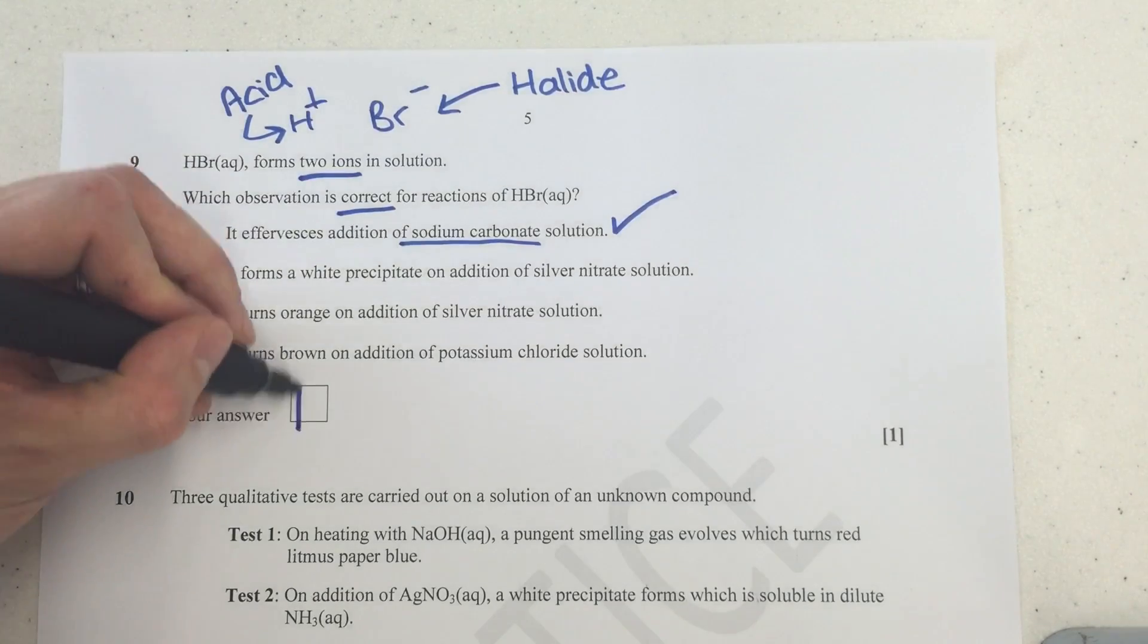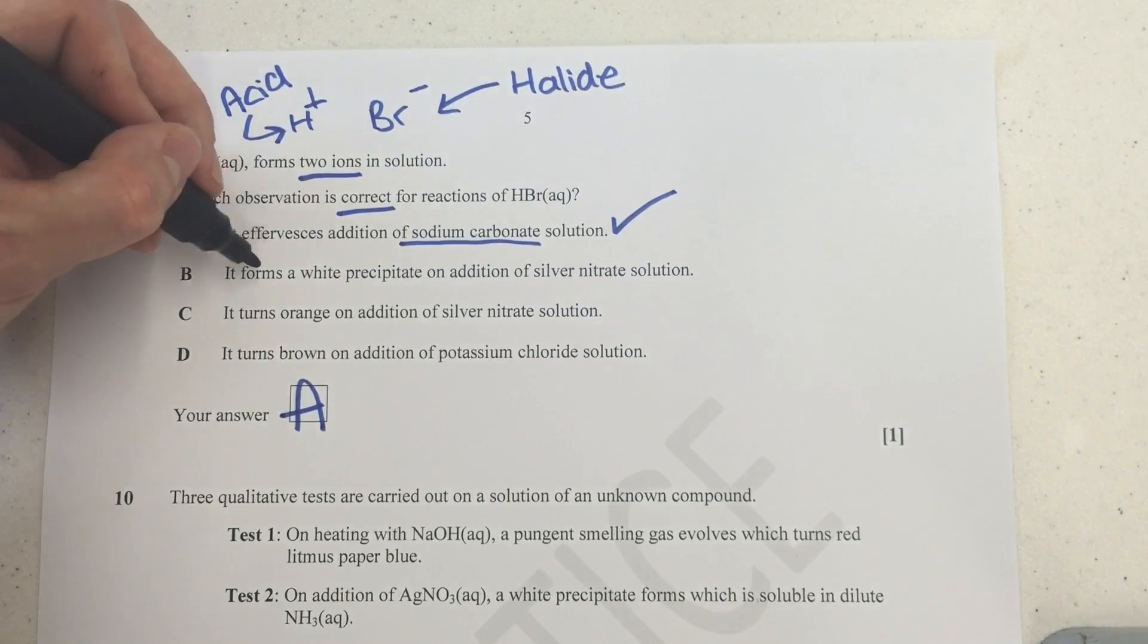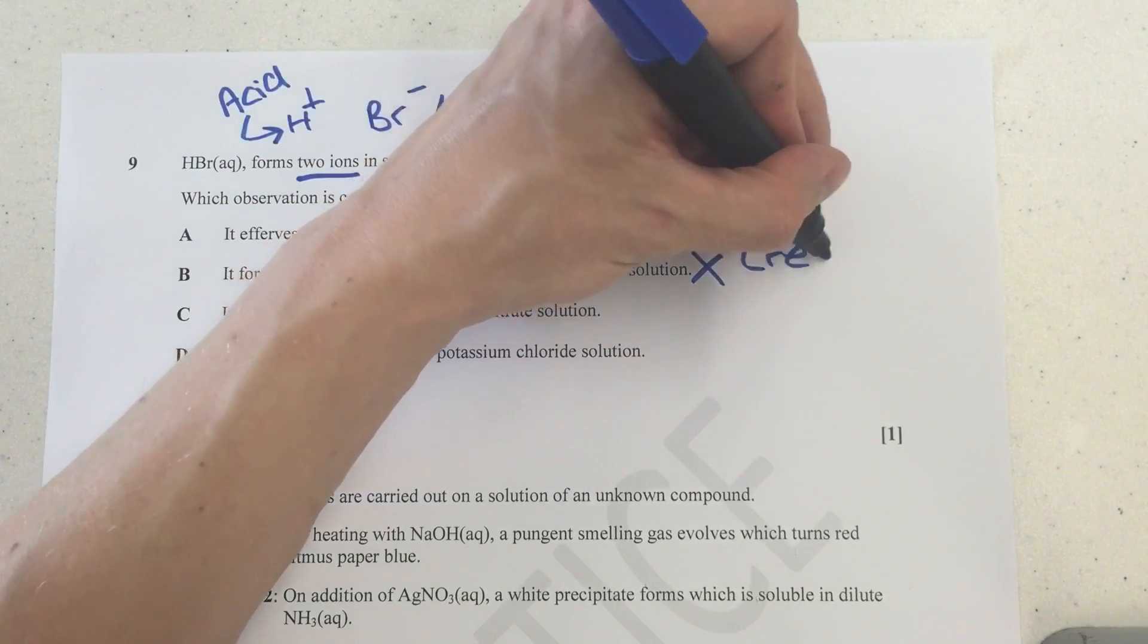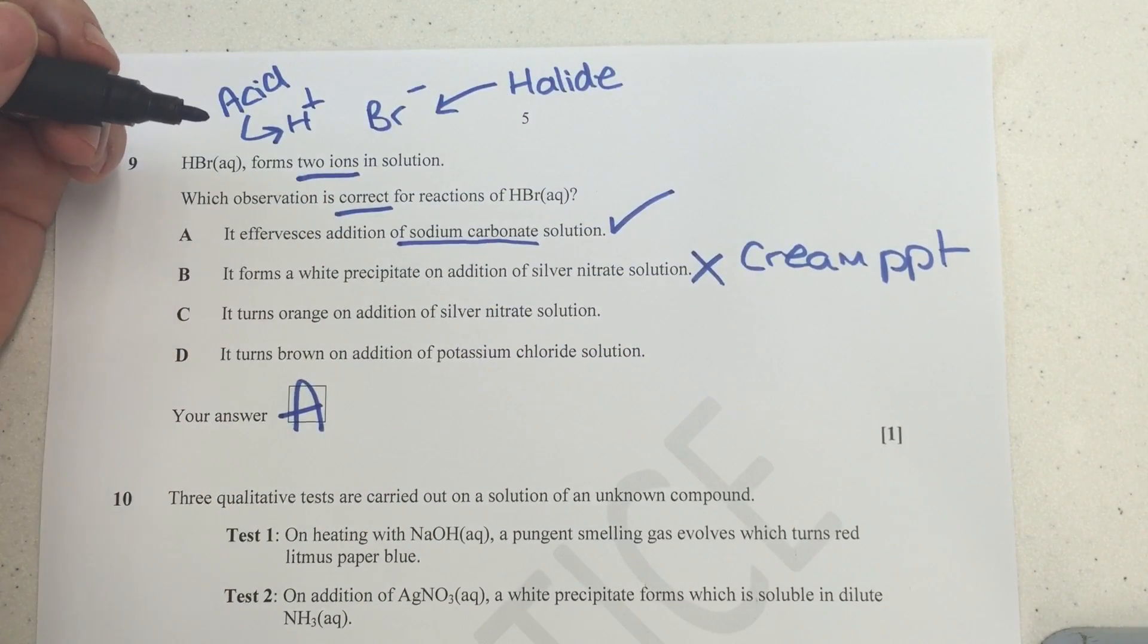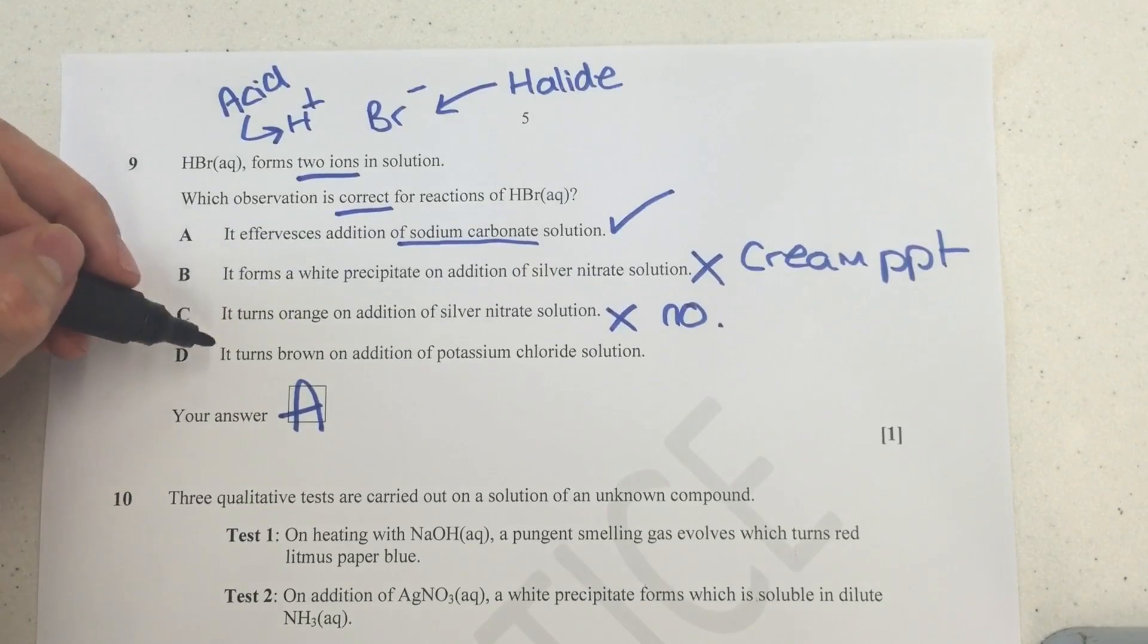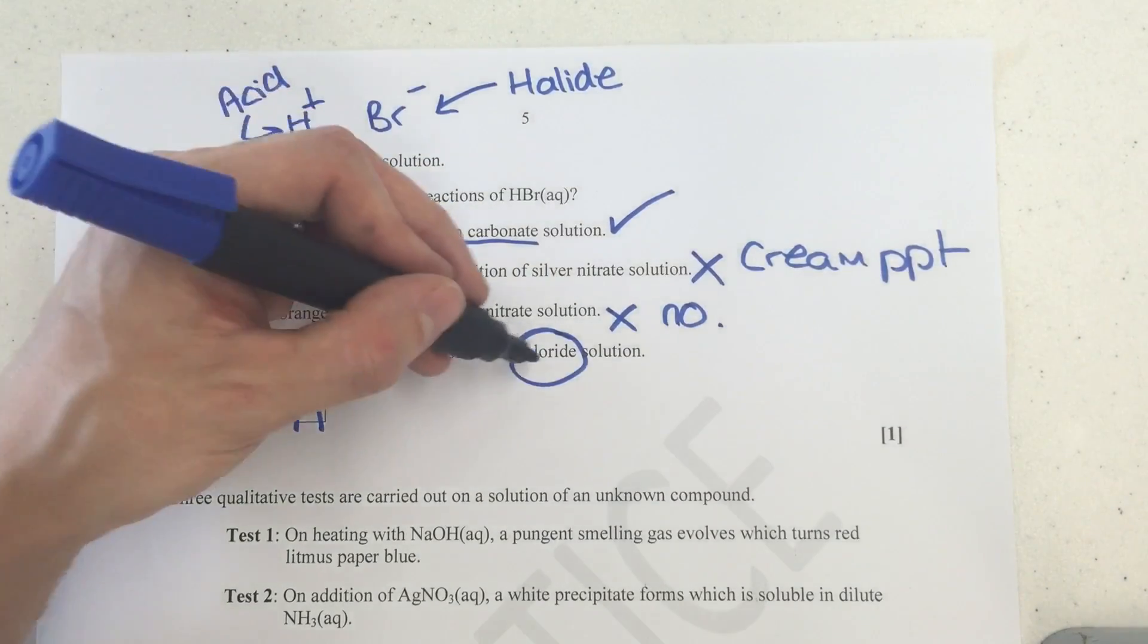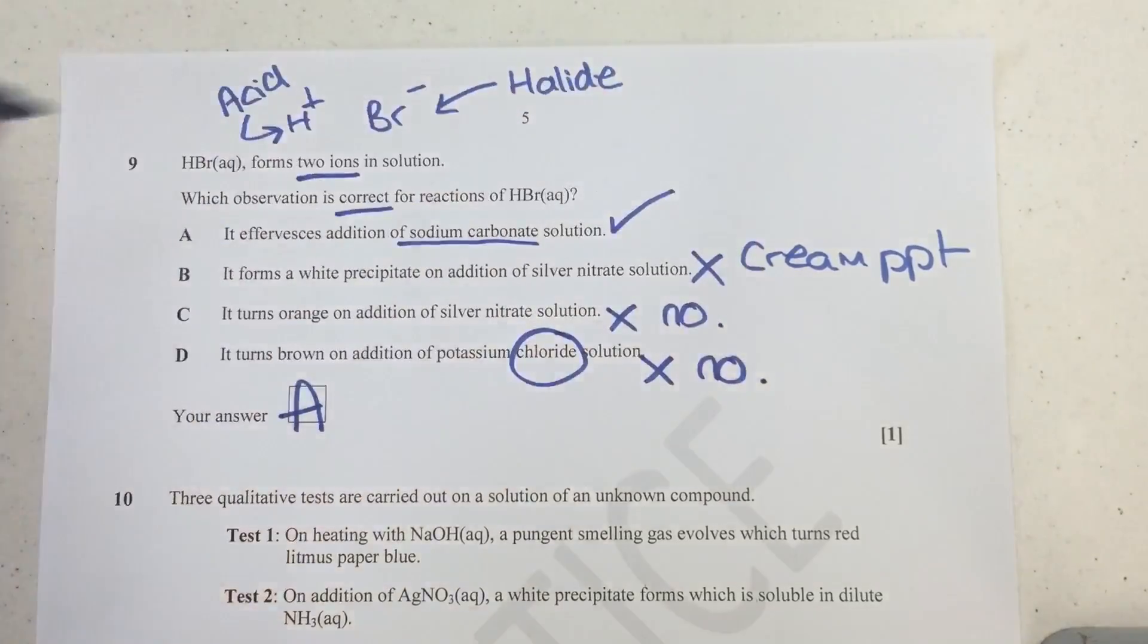Sodium carbonate will form CO2 bubbles if reacted with an acid. And since we've got an acid feature here, we actually know that this is going to be correct. So immediately I've actually found the right answer. Similar to before, I know it's going to be A. But let's have a look at why the others are incorrect because this will help us learn a bit more. It forms a white precipitate on the addition of silver nitrate solution. Well, that's wrong because it's actually a Br- halide. So it wouldn't form a white precipitate. It would form a cream precipitate. It turns orange on addition of silver nitrate solution. That's wrong because that's not something that ever happens. It turns brown on addition of potassium chloride solution. Well, that's suggesting chloride and bromide reaction, which isn't really anything. And definitely no chloride with acid reaction here that would make anything of a brown solution. So, no. There we go.